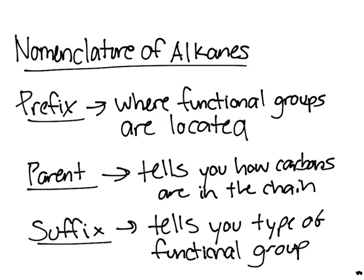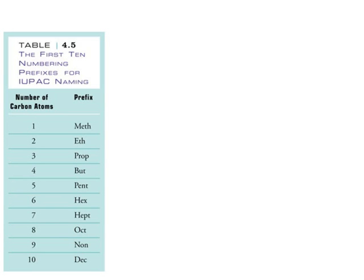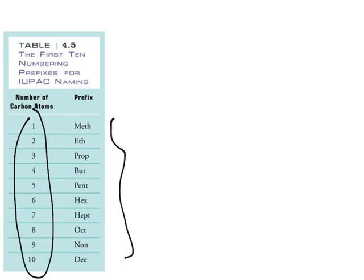This may seem confusing at first, but it'll come easier. We'll do some examples. Let me show you a diagram. These are the parent prefixes. Meth, eth, prop, like all of these prefixes right there, designate the number of carbon atoms, as you can see.